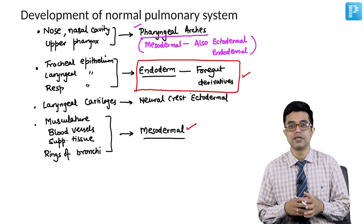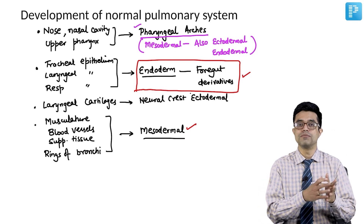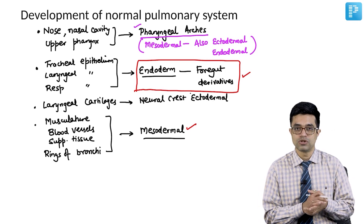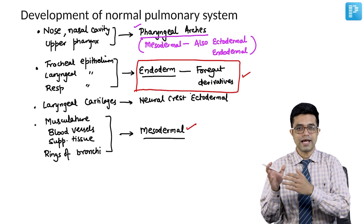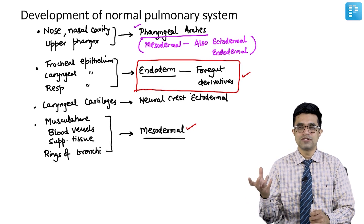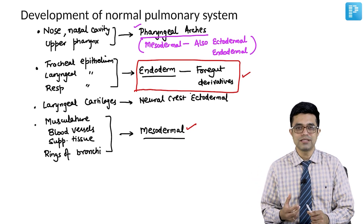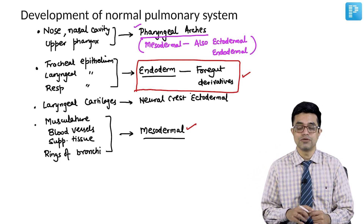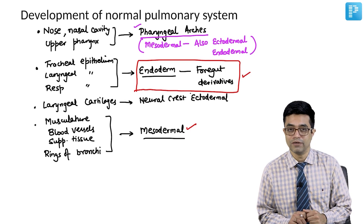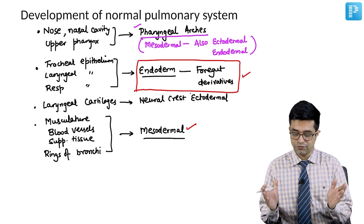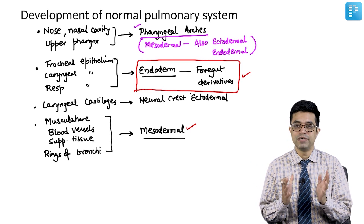Remember that the foregut also forms the proximal part of the gut. Gut and tracheal development tends to go simultaneously, and that is why you have all those tracheoesophageal fistulas developing whenever there is a foregut derivative defect.